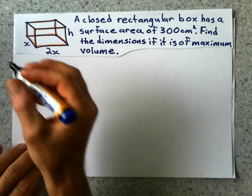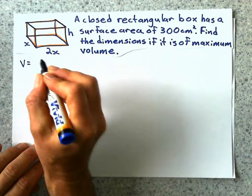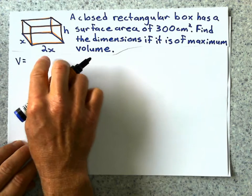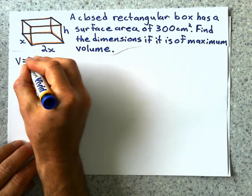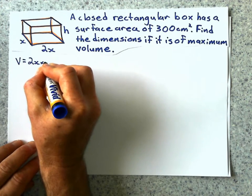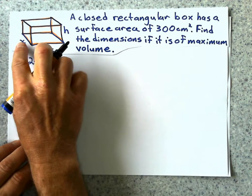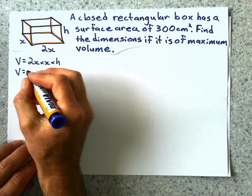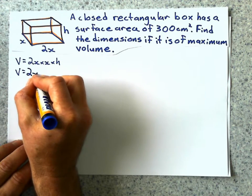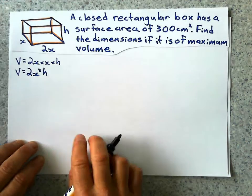All right, where do we start? First of all, let's get some formulas for the volume of this. Volume is base times width times height, so we've got 2x times x times the height. So we know the length is double the width, and I don't know what the height is yet. So we'll call the volume 2x squared h.